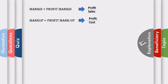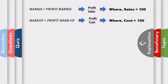That means, when sales are 100, we measure profit against sales. That is profit margin — profit divided by sales. Similarly, when we call profit markup, it is profit divided by cost, so we compare profit with cost. When we call profit margin, sales is 100. When we call markup, cost is 100.